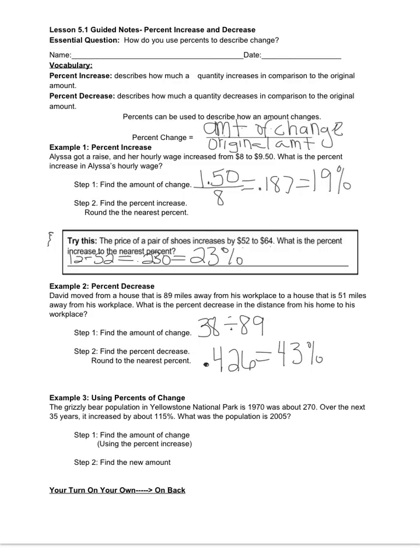All right, now for example three, we're going to look at how we can use these percent increases or decreases to find out other information about a problem. The grizzly bear population in Yellowstone National Park in 1970, see if you can spot my typo, was about 270. Over the next 35 years, it increased by about 115 percent. What was the population in 2005?